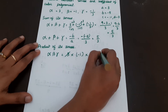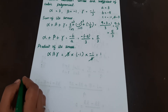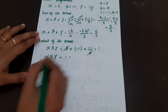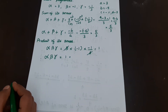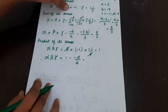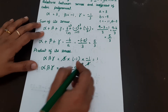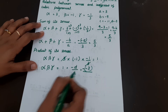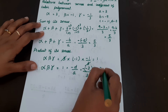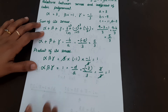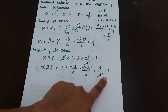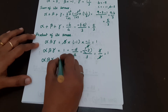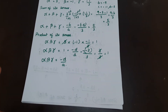The product of all zeros: alpha × beta × gamma. Here d = -3, so -d/a = -(-3)/3 = 3/3 = 1. The actual product: 3 × (-1) × (-1/3) = 3 × (1/3) = 1. So alpha × beta × gamma = -d/a = 1 is verified.